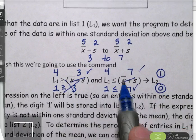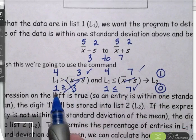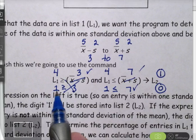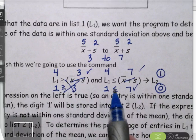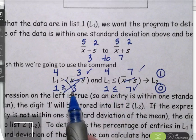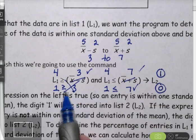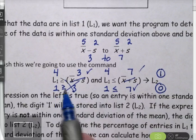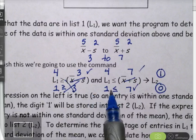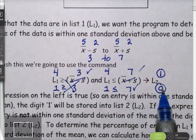So if either one of these isn't true, for instance, let's say there's a 1 in list 1. A 1 is not greater than or equal to 3. Now sure, a 1 is less than or equal to 7, but it's not greater than or equal to 3. So the number 1 would not be within one standard deviation of the mean. So in this case, a 0 would be stored into list 2.